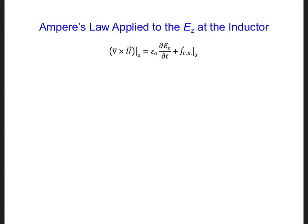Going back to the pointwise form of Ampere's law as shown here, if we now consider the ez component having the inductor, then we can set jce again equal to ice for the inductor divided by delta x times delta y. And now for ice, we can plug in the expression we had on the previous slide for the current of the inductor.